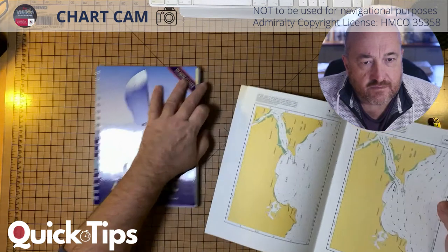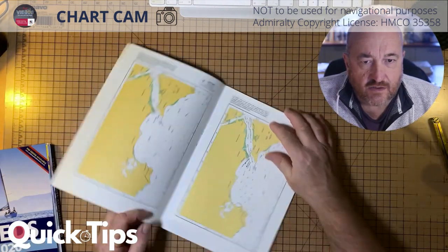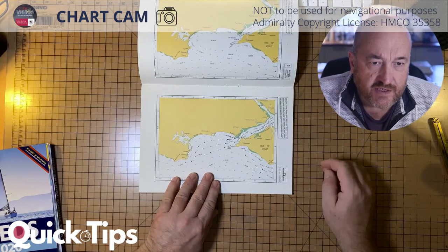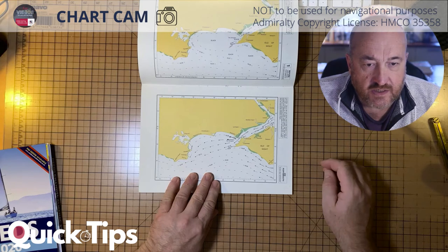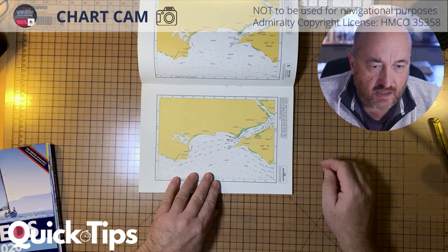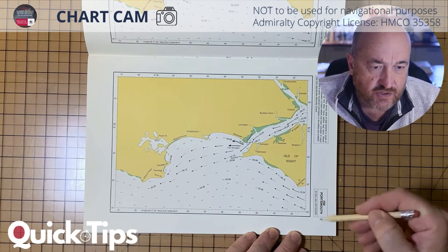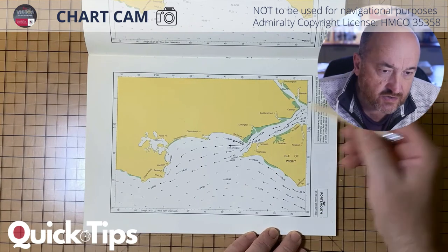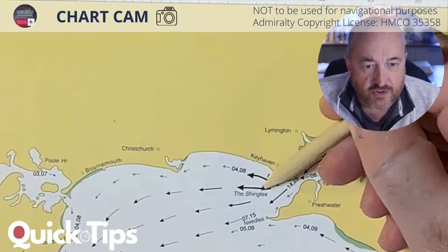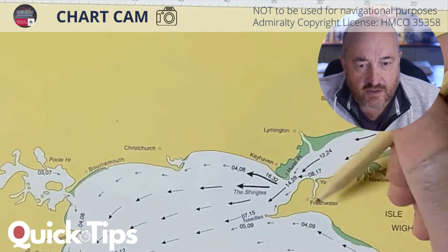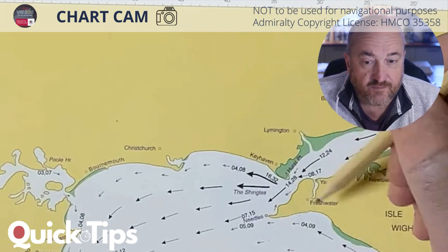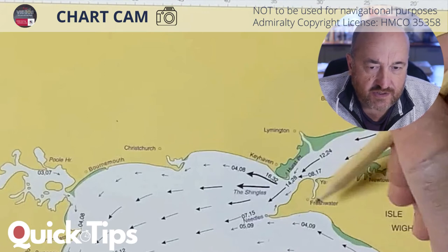So that's what a tidal flow or tidal stream atlas looks like. You can see we've got a page for every hour of the tidal flood and tidal ebb based around high water — and it's high water Portsmouth in this instance. So always check what the tidal atlas refers to. You can see it also refers to one hour 20 minutes after Dover high water. So you could use Dover or Portsmouth, dependent on whether you've got the high water times for either. The bigger, darker and deeper the arrow, the more tidal flow there is.